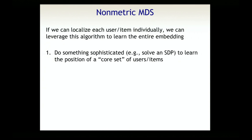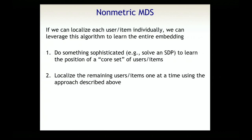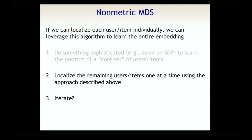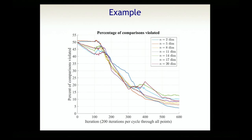If we can localize both users and items separately, there's a simple way to do large-scale non-metric multidimensional scaling. The algorithm is to solve a semi-definite program to learn the location of a core subset of users and items, then localize all remaining users and items one at a time using the localization approach, iterating if desired. Even ignoring the first step, choosing a random starting point and iterating over all of them works surprisingly well.